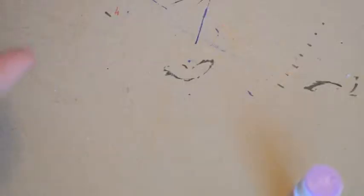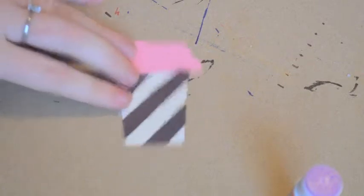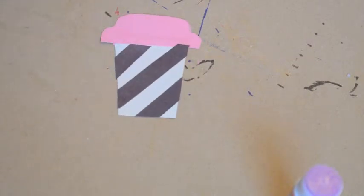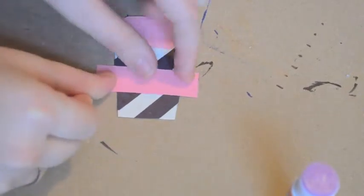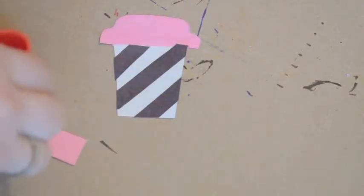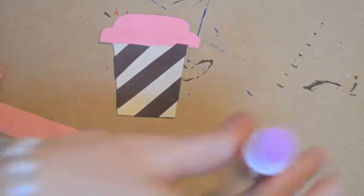So this step is optional, but what I did was take black strips of black paper and I just glued them on to make stripes. Next, take the same color as your top and cut out a rectangle and glue it across your cup, just kind of as like the coffee cup holder.